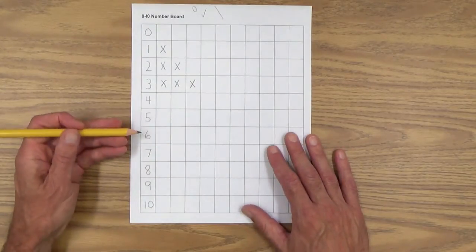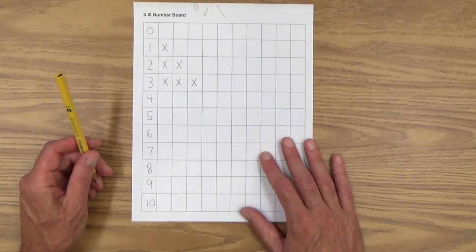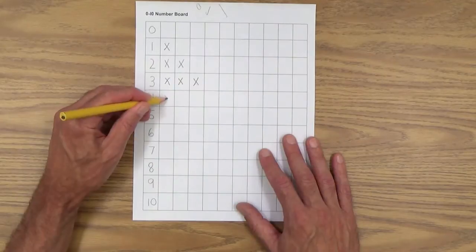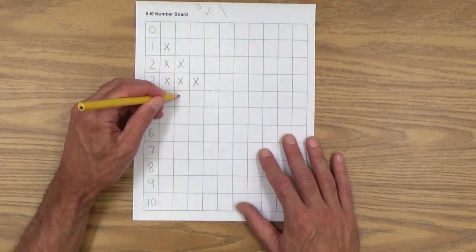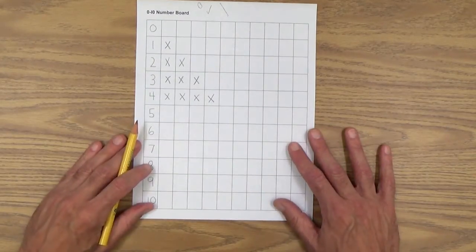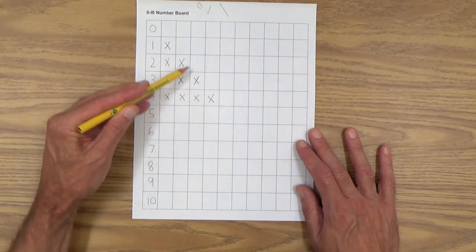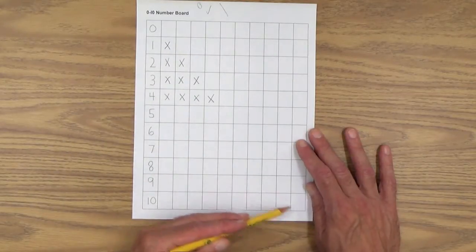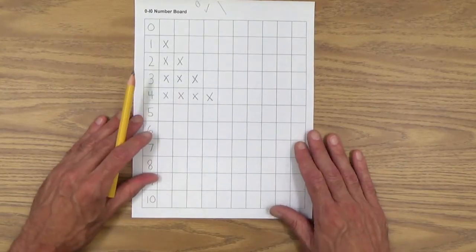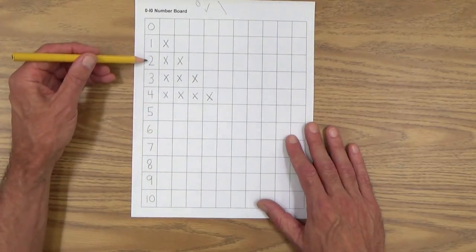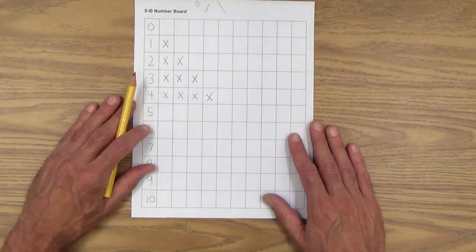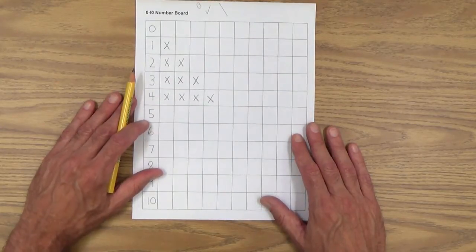But anyway, back to the number board here. As you can see, you could hand the task over to them now, or you could start out with a fresh copy. And I'm going to keep going here. One, two, three, four. And what's going to happen here is they're going to see a pattern and the last X is going to be on a diagonal line like that. And this is really a good way for the child to see that in consecutive numbers, the next number is always one more than the last one. So you might even want to point that out to them.